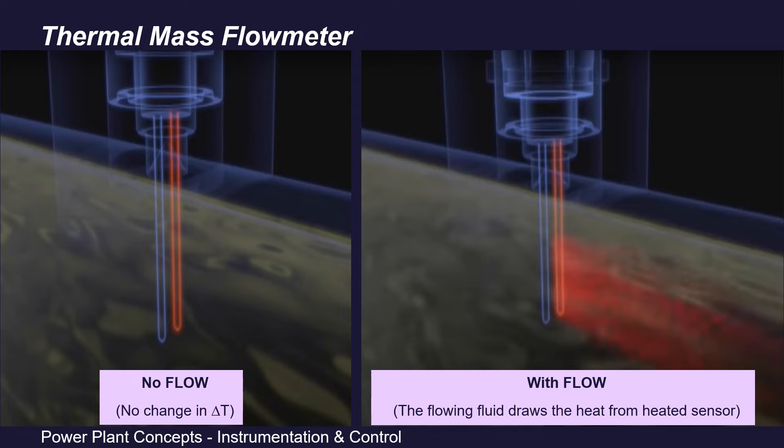But as soon as the fluid begins to flow in the pipeline, the flowing fluid draws the heat from the heated sensor. The corresponding cooling effect is immediately measured. And to maintain the same temperature difference of 15 degrees, the second sensor is heated more by providing more electrical current. This heating current required to maintain the temperature difference is proportional to the cooling effect. Also,